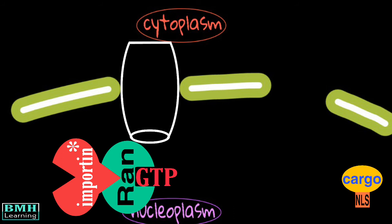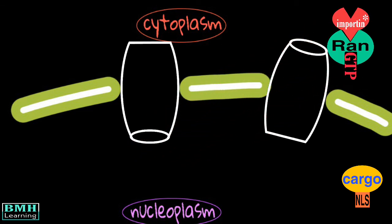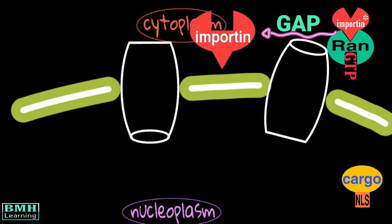What about the complex of the importin and RAN GTP? We need to export it out of the nucleus. For the next round of the protein transport to the nucleus, the RAN GTP is subjected to a GTPase activating protein which removes GTP, and importin conformation is changed again, which is suitable for binding with cargo.